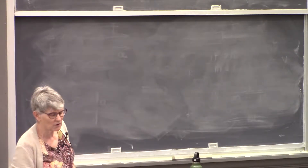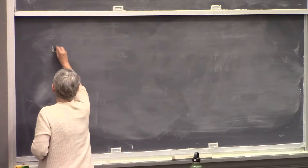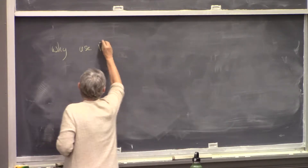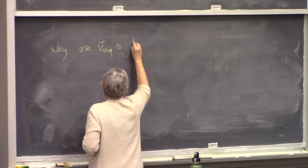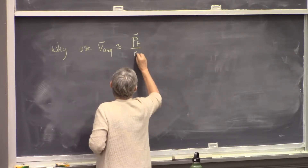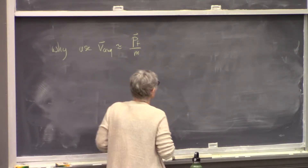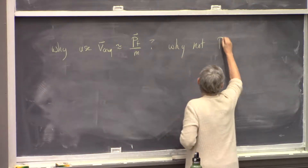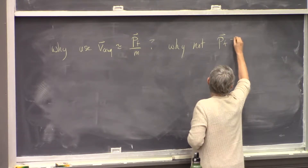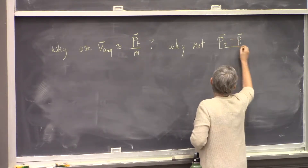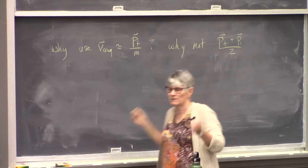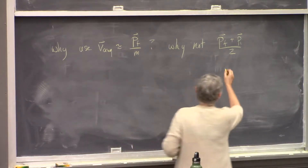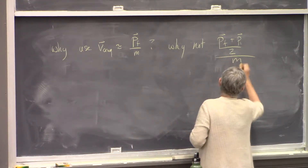So there's a question though: why are we using the average as approximately the momentum at the end of this time interval? Why not the arithmetic average, which would be adding the momentum at the beginning plus the momentum at the end, dividing by two, and then dividing that whole thing by the mass?